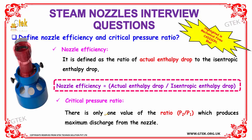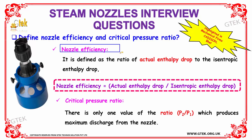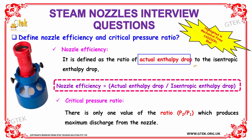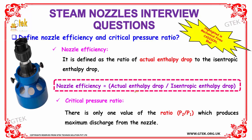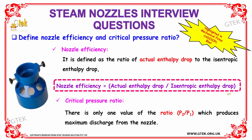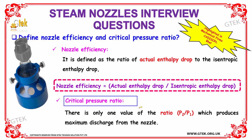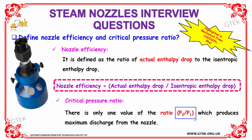Define nozzle efficiency and critical pressure ratio. Nozzle efficiency is the ratio of actual enthalpy drop to the isentropic enthalpy drop, that is: actual enthalpy drop divided by isentropic enthalpy drop. For the critical pressure ratio, it is the value of P2 divided by P1 which produces maximum discharge from the nozzle.